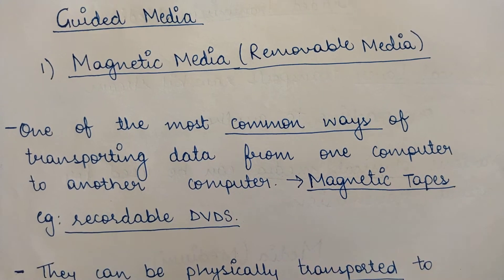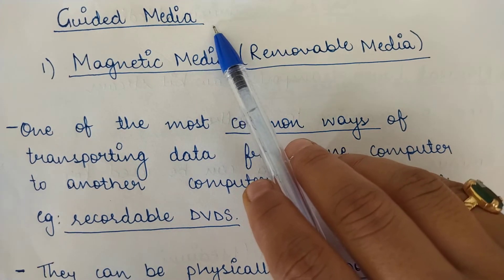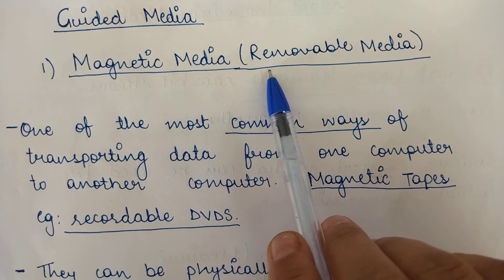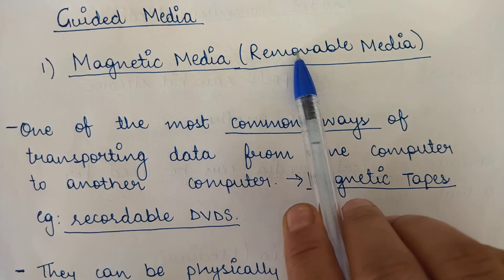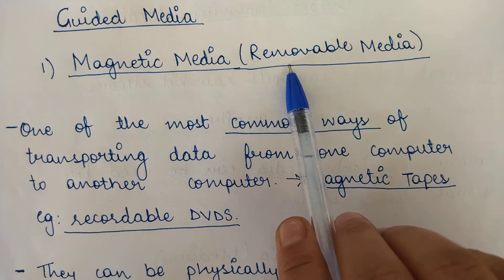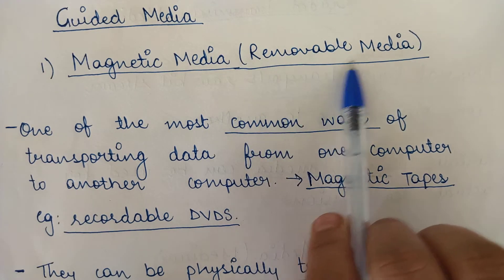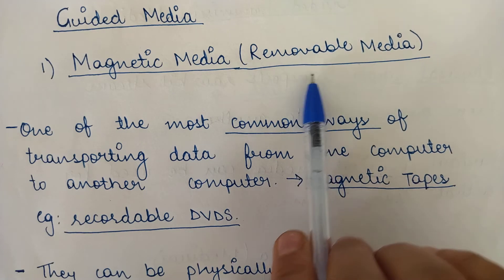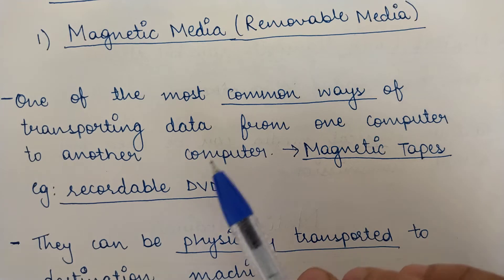Guided media uses wires for transmitting data, hence it is also called wired media. Magnetic media is basically removable media — a medium which can be inserted inside a computer and then removed from it. Hence it is also known as removable media, meaning it does not have to be built into the computer; it can be inserted and then removed.